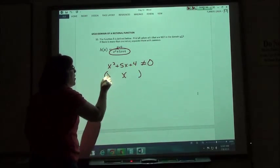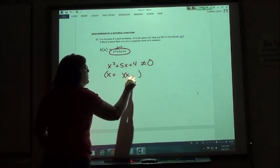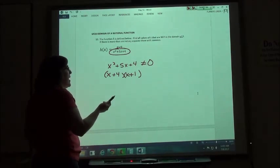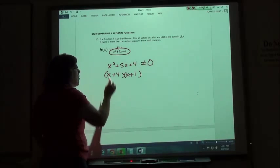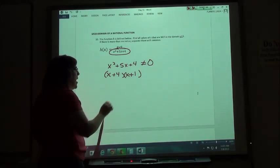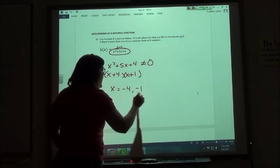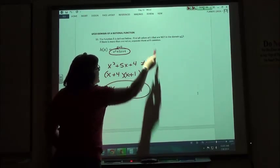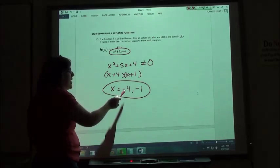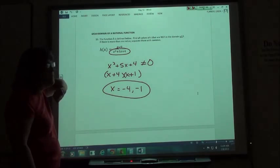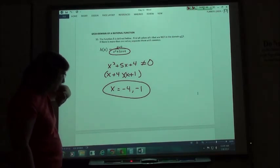...since it's a quadratic, we solve by factoring. Factors of 4 that add to 5 are 4 and 1, so we get (x+4)(x+1) = 0. Since it's set equal to zero, we end up moving it over and getting the opposite: x can't be negative 4 or negative 1. So the values that are not in the domain are negative 4 and negative 1, because they would make zero on the bottom of the fraction.